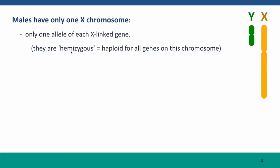Males have only one X chromosome, so they have only one allele of each X-linked gene. They're not diploid for these genes — for these genes, they're haploid. We use the term hemizygous to refer to blocks of genes that are all present only in a single copy.